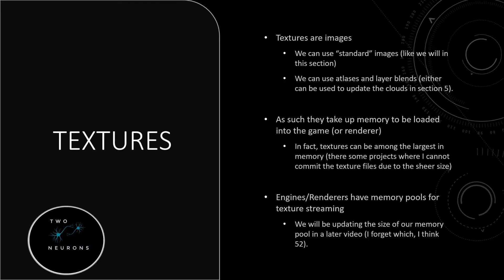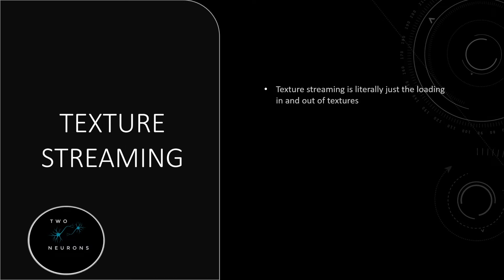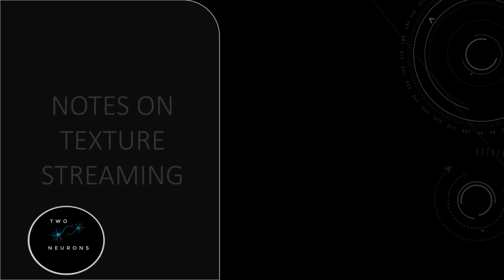Let's talk about texture streaming in more detail. Texture streaming is literally just loading textures in and out of memory — is a texture in memory or not? Are we streaming it in? If the pool is full — too many large textures loaded at once, or many small textures that add up — the engine will no longer be able to load in higher resolution textures. This might result in images appearing blurry. They're not really blurry — what we're seeing up close is a lower resolution version of the image meant to be viewed at a distance, similar to an LOD. Imagine if an LOD didn't load in when you walked up to it. We'll talk more about this in terms of MIPs later on. MIPs are simply akin to LODs for textures — yes, it's more nuanced than that, and we'll come back to it.